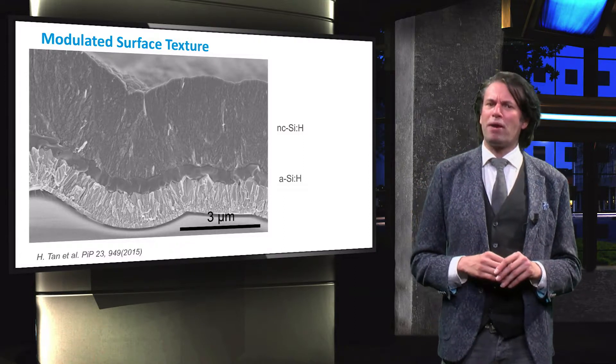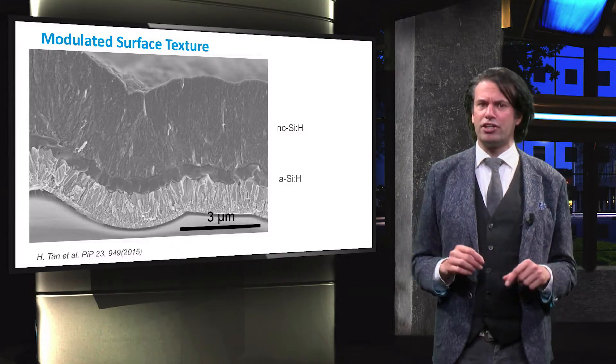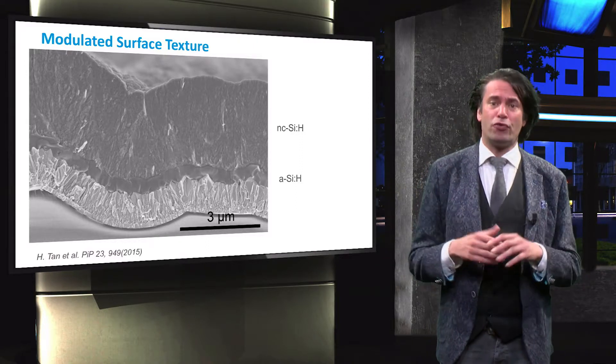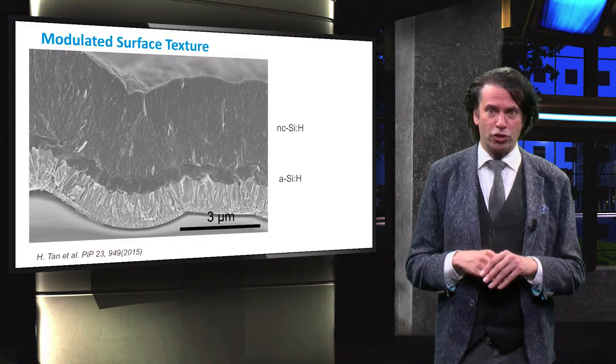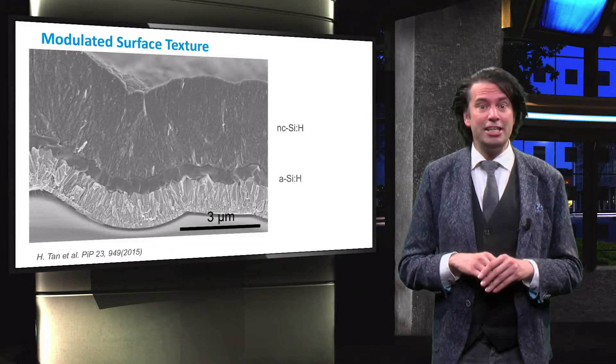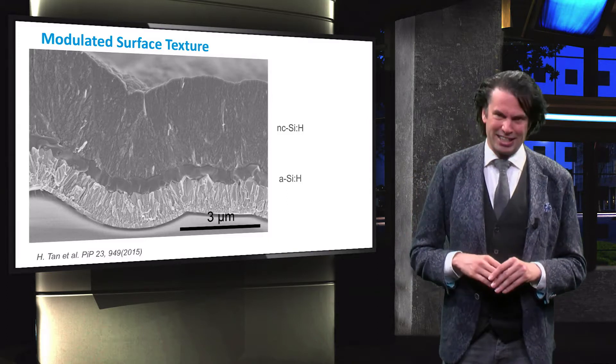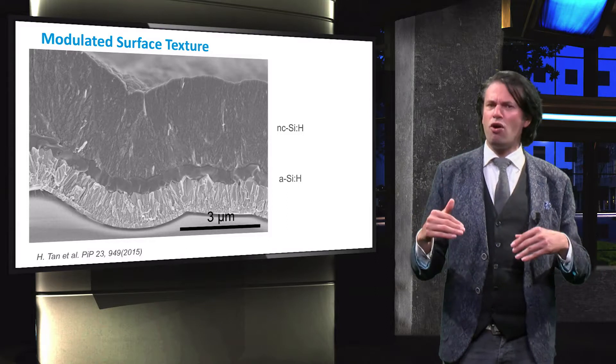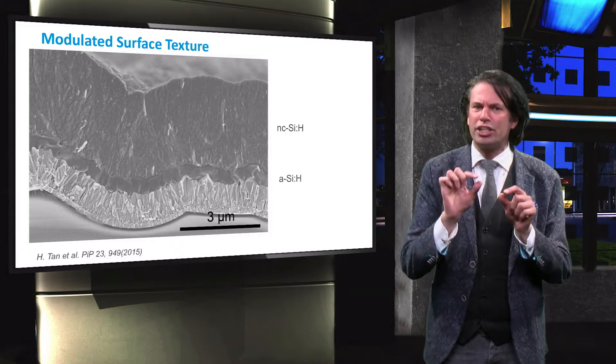This has been achieved by applying large-scale texture in the glass substrate. On top of that, a highly transparent front electrode has been deposited, consisting of two layers. First, a hydrogenated indium oxide layer, and secondly, an intrinsic zinc oxide layer. The natural texture of the intrinsic zinc oxide acts like the nano-scale texture.